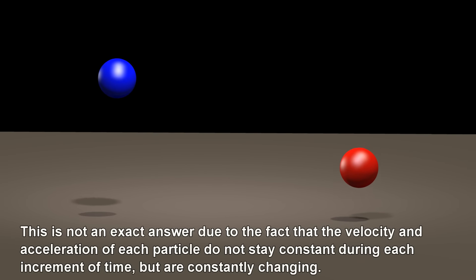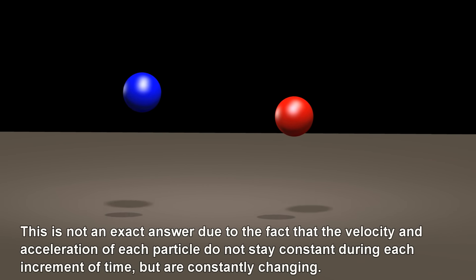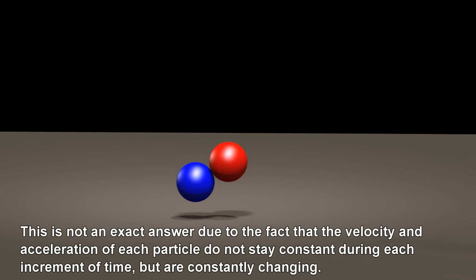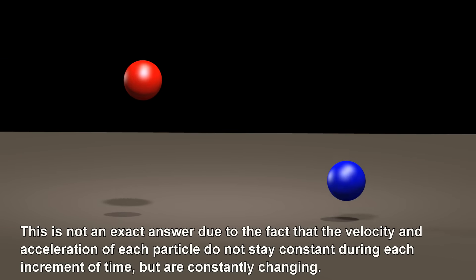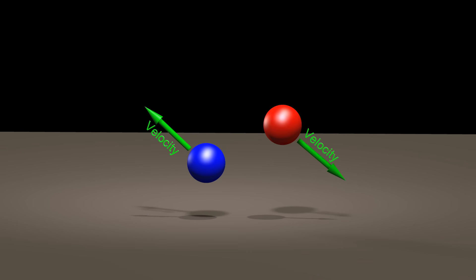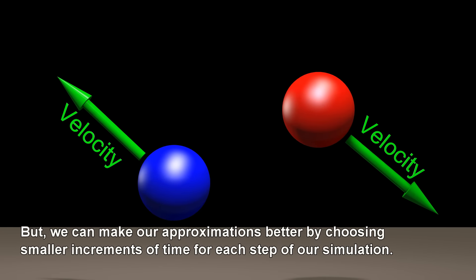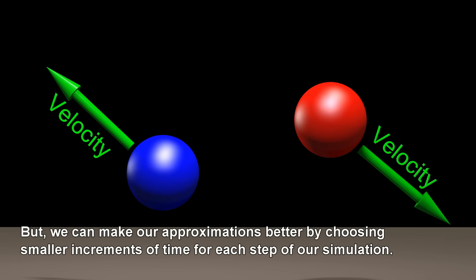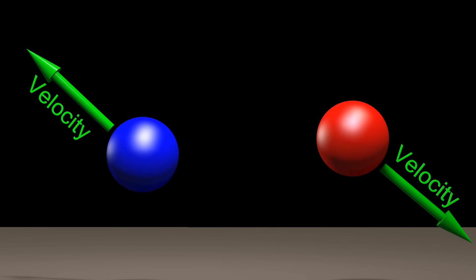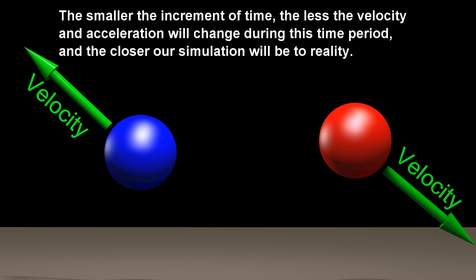This is not an exact answer due to the fact that the velocity and acceleration of each particle do not stay constant during each increment of time, but are constantly changing. We can make our approximations better by choosing smaller increments of time for each step of our simulation. The smaller the increment of time, the less the velocity and acceleration will change during this time period, and the closer our simulation will be to reality.